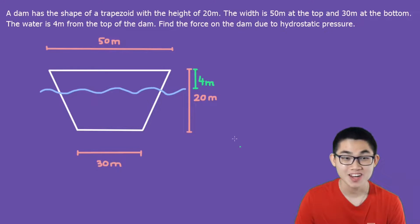So I've drawn this diagram and our trapezoid is submerged in the water but not all the way because there's 4 meters between the top and the surface of the water. The height is 20 meters as you can see and the width is 50 meters at the top and 30 meters at the bottom.